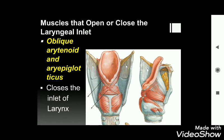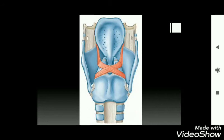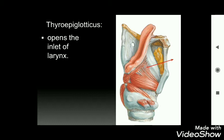Muscles that open or close the laryngeal inlet: the oblique arytenoid and aryepiglotticus muscles are responsible for closing the laryngeal inlet, while the thyroepiglotticus muscle is responsible for opening the laryngeal inlet.